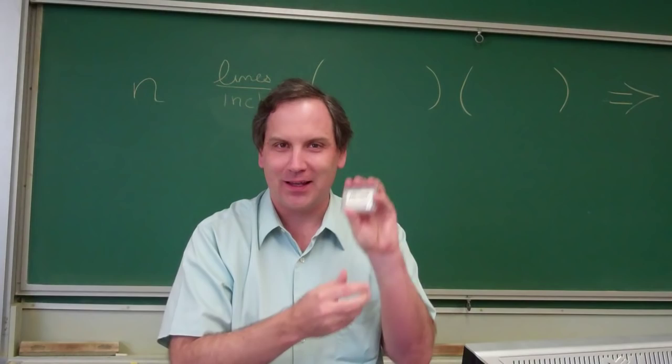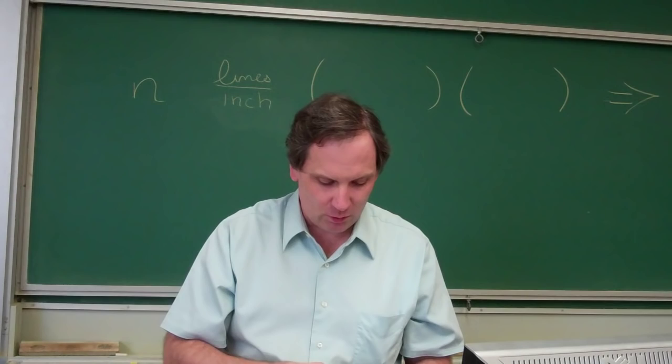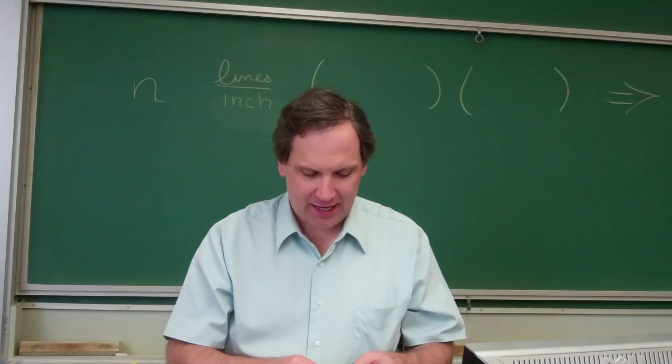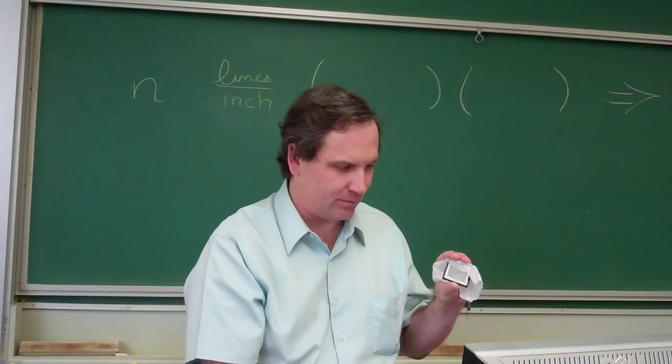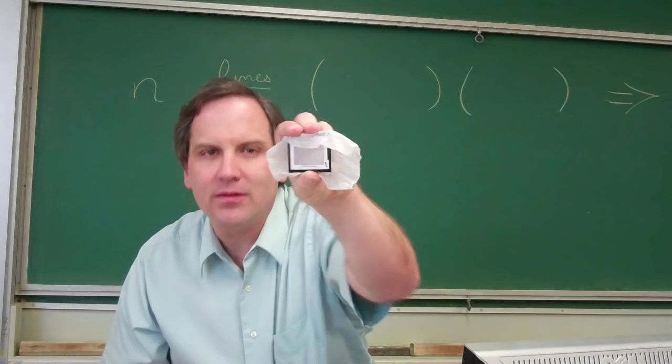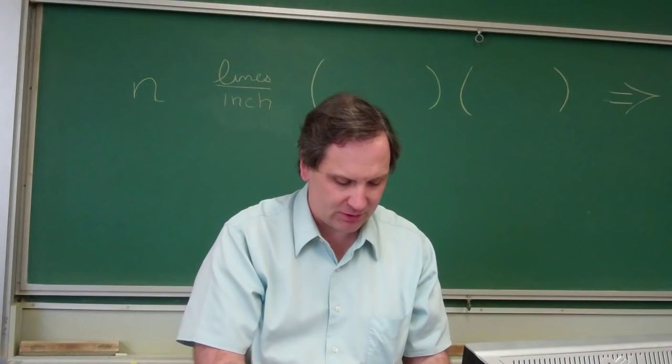First thing you're going to need for today's lab is diffraction grating. They come in little boxes like this. If you open them up, they tell you, this is very important, so pay attention. It tells you that, for example, this one says it has 15,000 lines per inch. It lies. You also see a number here, one. Trust me, it's on there. The one is much more important than the 15,000 lines per inch.